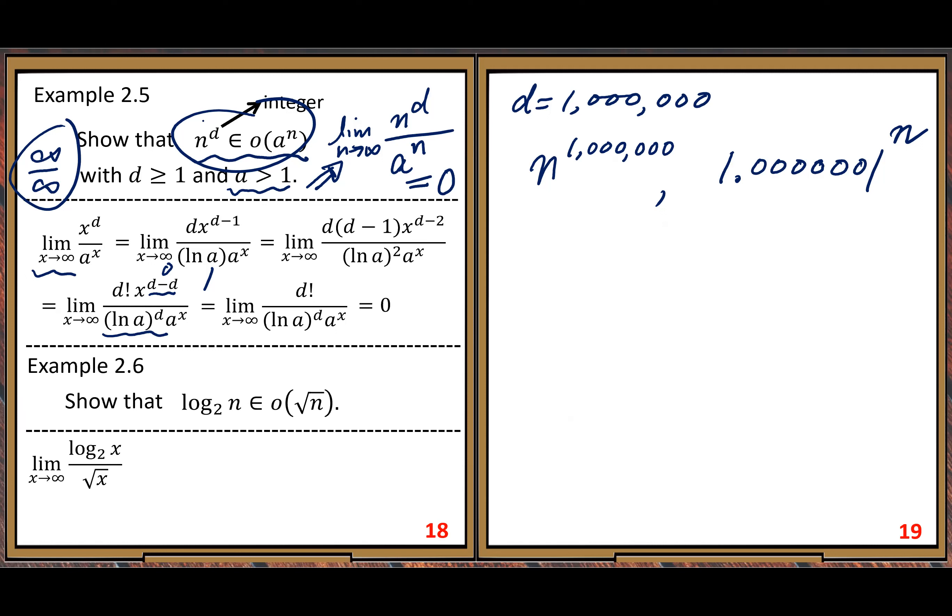Let us write the continuous version for x, continuous variable version. So we can take derivative, numerator, denominator.